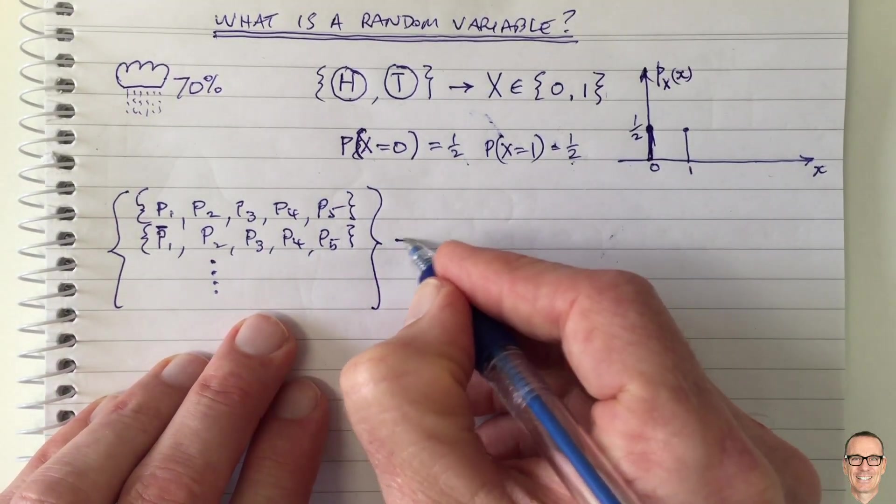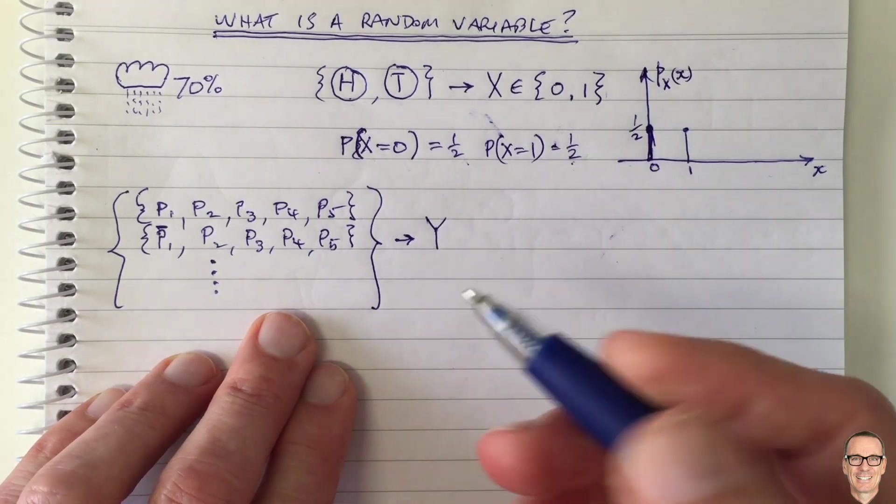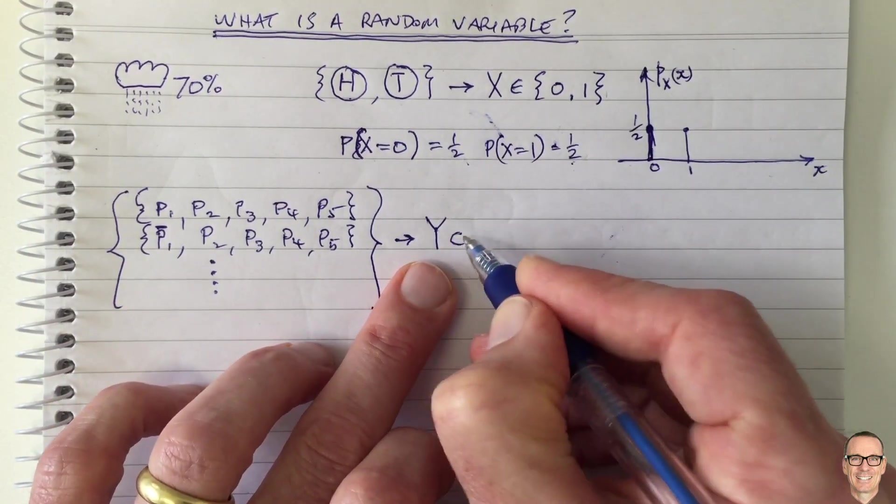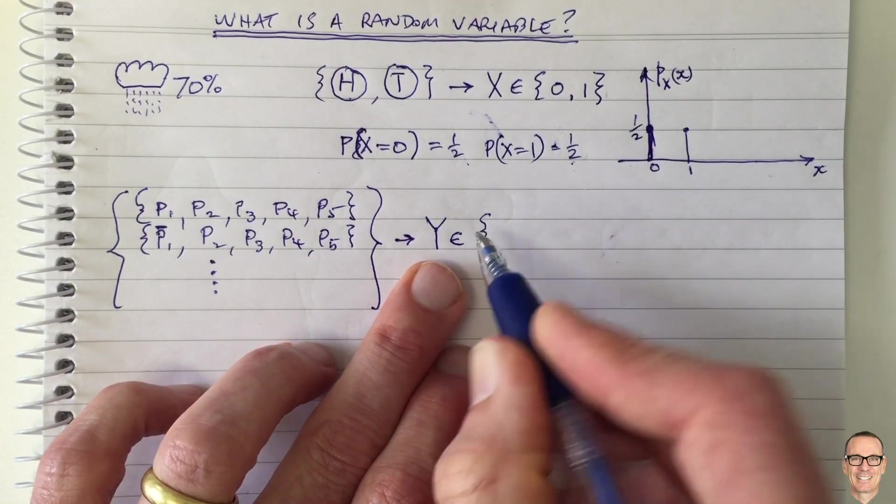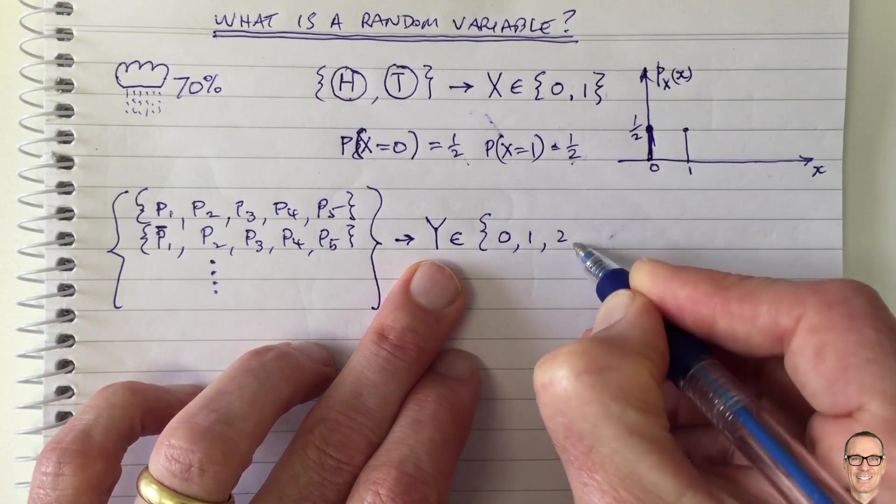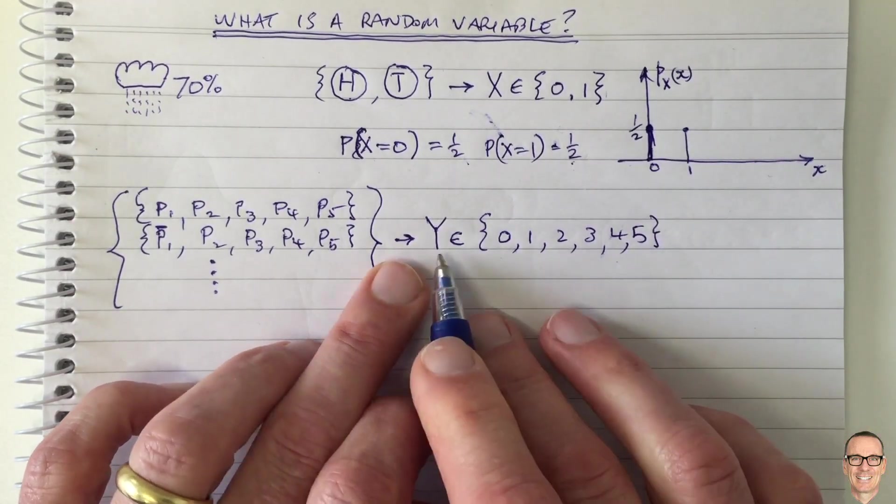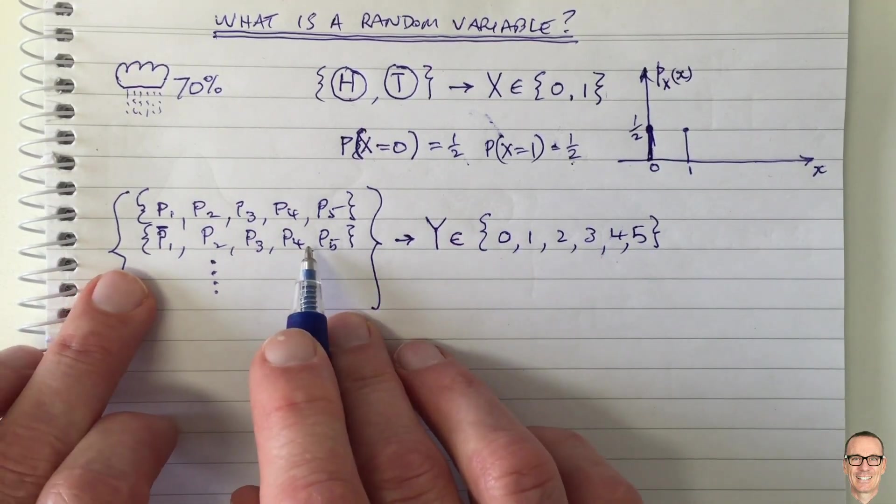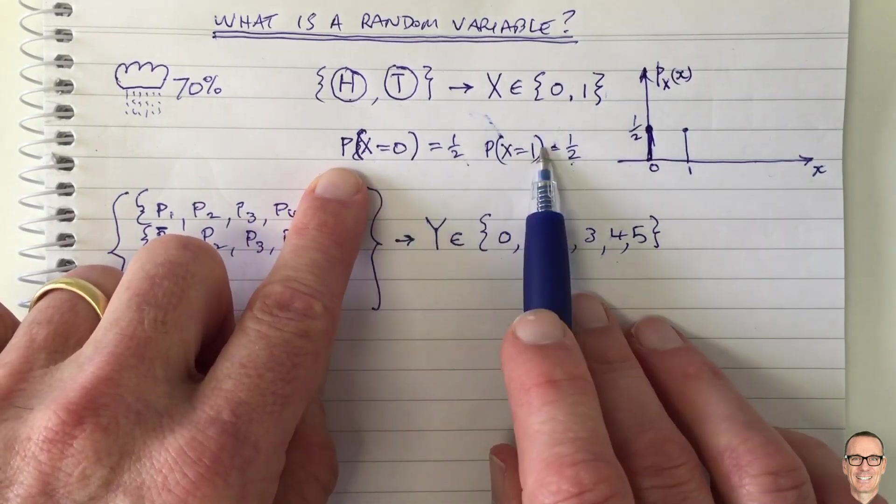Okay, so this maps onto our random variable. In this case, I'm going to use Y. It's your choice to label your random variables, but you use capital from tradition. We're interested in the number of people using Wi-Fi, so in this case Y takes elements from the set zero—there could be nobody using it—all the way up to five people using it. So this is our random variable, it's on the real space, mapping from the set to the real numbers. But in this case, what is this associated probability?